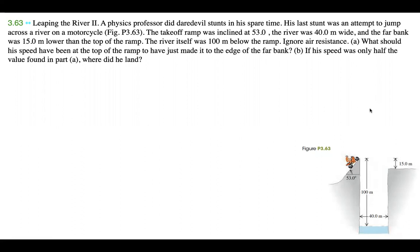Part A: what should his speed have been at the top of the ramp to have just made it to the edge of the far bank? Part B: if his speed was only half the value found in part A, where did he land? The river itself was 100 meters below the ramp. Ignore air resistance. So the professor is 100 meters above the water, and 15 meters below the top of the ramp is where he wants to land.